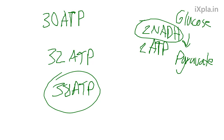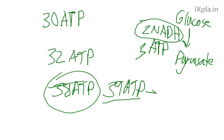You'll see some differences depending on the fuel source. If you use free glucose — glucose you just ate — that's one number. But if you use glycogen, which is the stored form of glucose already inside the muscle, there's a difference. When free glucose enters the cell, it must be phosphorylated to prevent it from leaving, and that process costs one ATP. Muscle glycogen is already inside the cell, so it doesn't need to be phosphorylated. This means instead of forming two ATP from glycolysis, you form three ATP — one more. So if you use muscle glycogen, you form 39 ATP total.